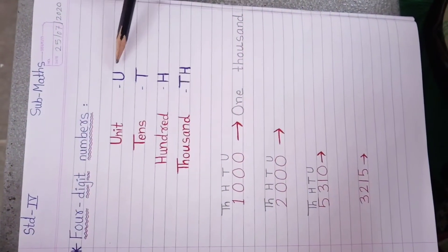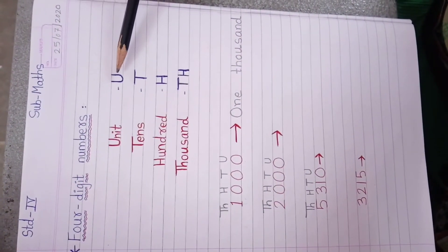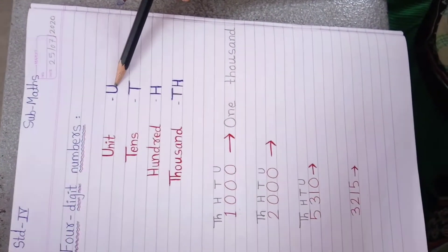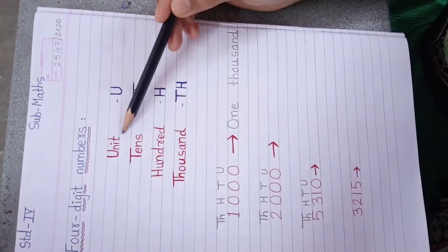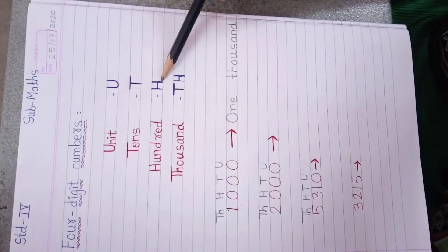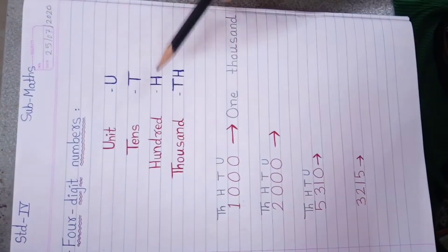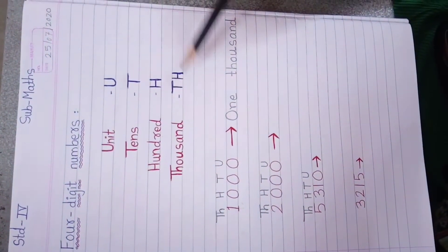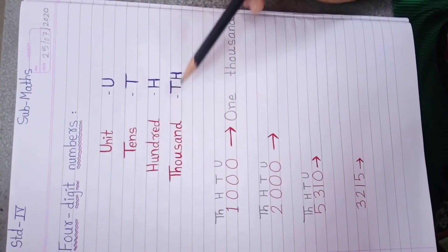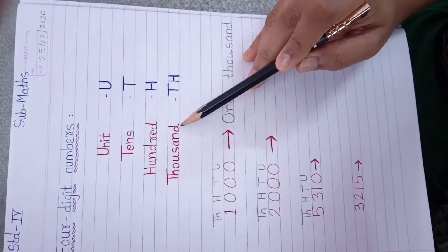So you know place values. For 3-digit numbers the place values are U for unit, T for tens, H for hundred. So for the 4-digit number we will use TH — TH means 1000.